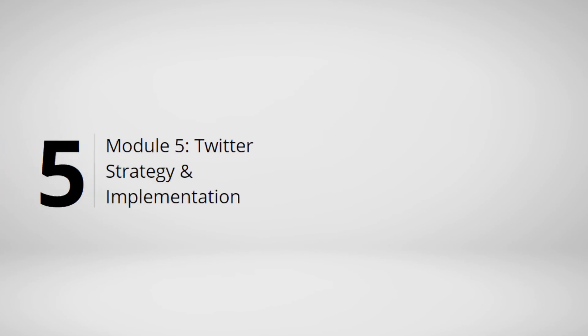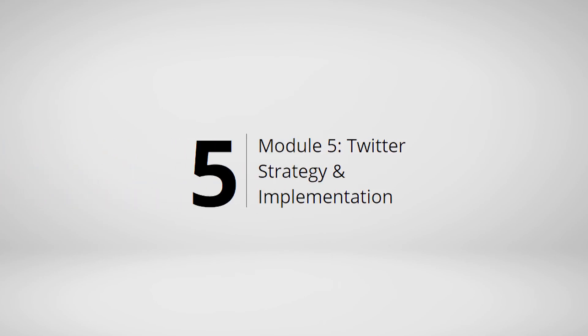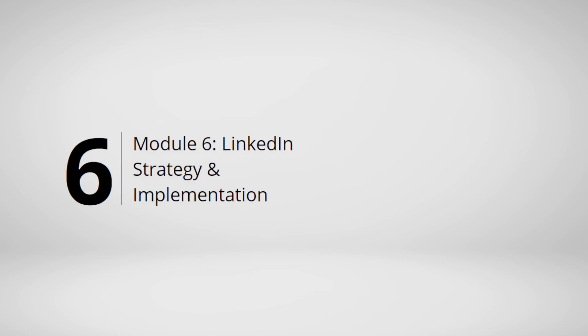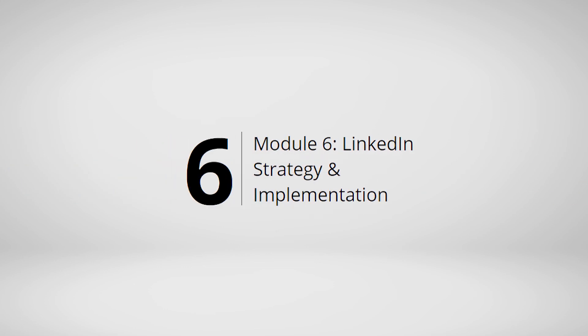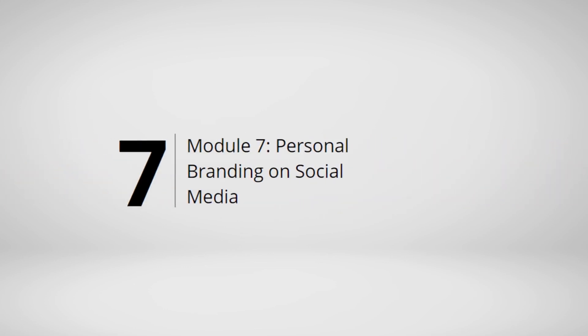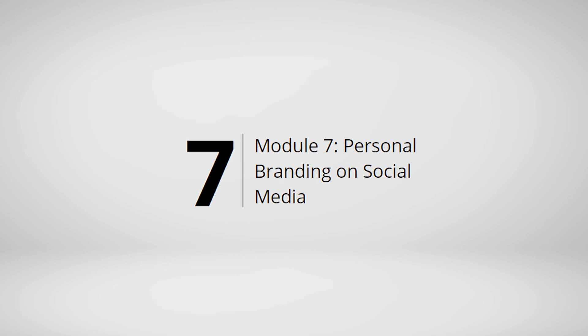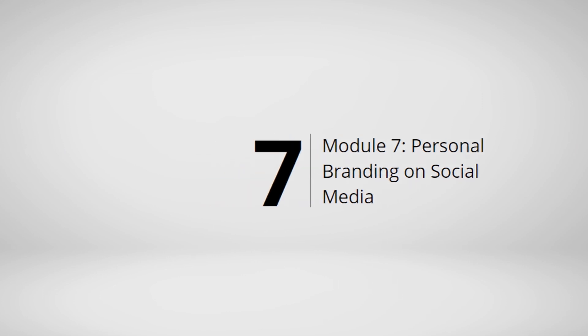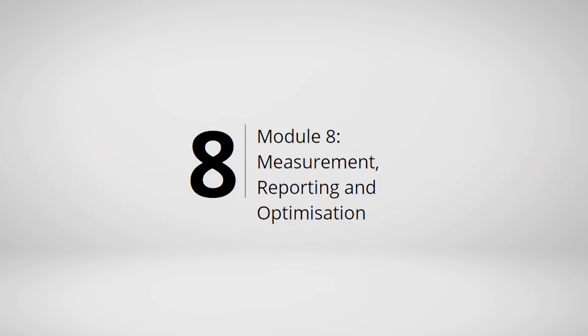We then move into module 5, which is all about Twitter strategy and implementation. Module 6 is all about LinkedIn and how to grow your professional network. Module 7 is all about how to master your personal brand through social media marketing. And module 8 will teach you how to continuously measure and optimise your strategy to maximise your results.